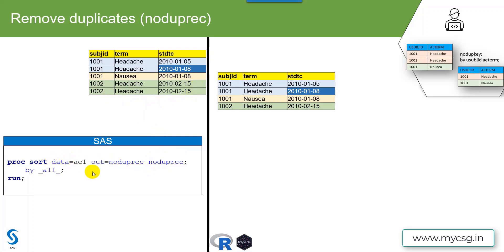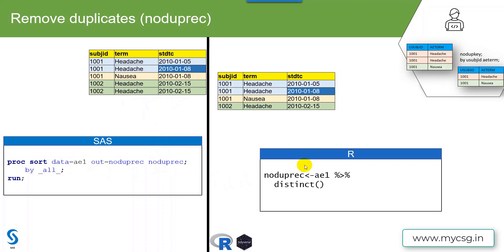To replicate this in R's tidyverse, we have the distinct function. All we need to do is apply that function to the input dataset ae1. The distinct function checks the combination of values across all variables and keeps only one instance of each unique combination. It's very simple — distinct with no additional arguments, passing ae1 to the function.